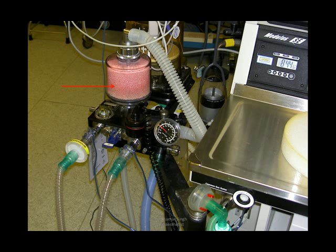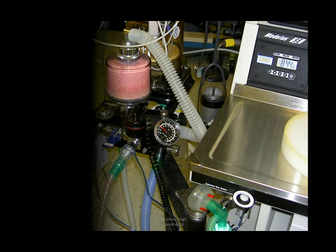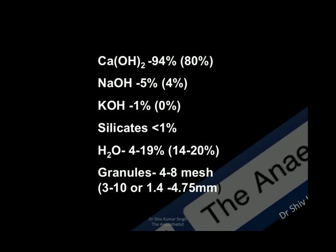The most important component of a circle system is the soda lime. The soda lime consists of calcium hydroxide, sodium hydroxide, and potassium hydroxide — which is not used in new soda limes because it is very caustic. Silicates were used in the older soda lime but not in the new ones. It obviously has water, the content of which can vary from 14 to 20 percent. The granule size is around 4-8 mesh size.